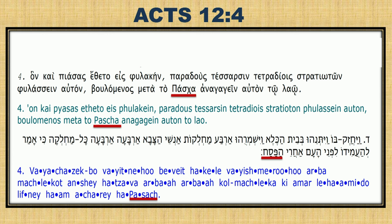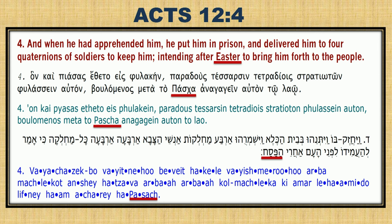Now, Acts 12:4. Here is the Hebrew — the Passover, HaPesach. Here is the Greek — Pascha. But how do the translators translate it as Easter? How come they translate Pascha as Passover in one verse, but it becomes Easter in another verse?